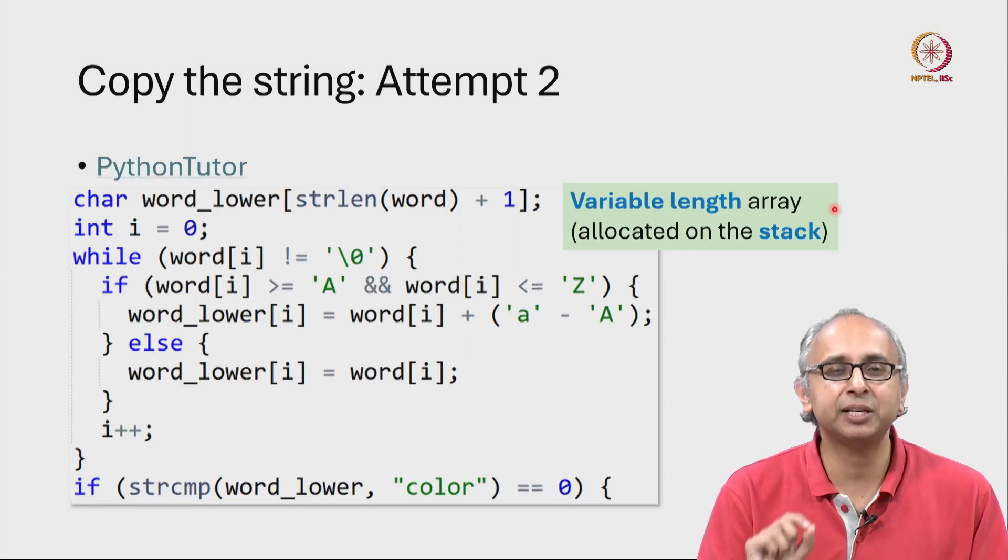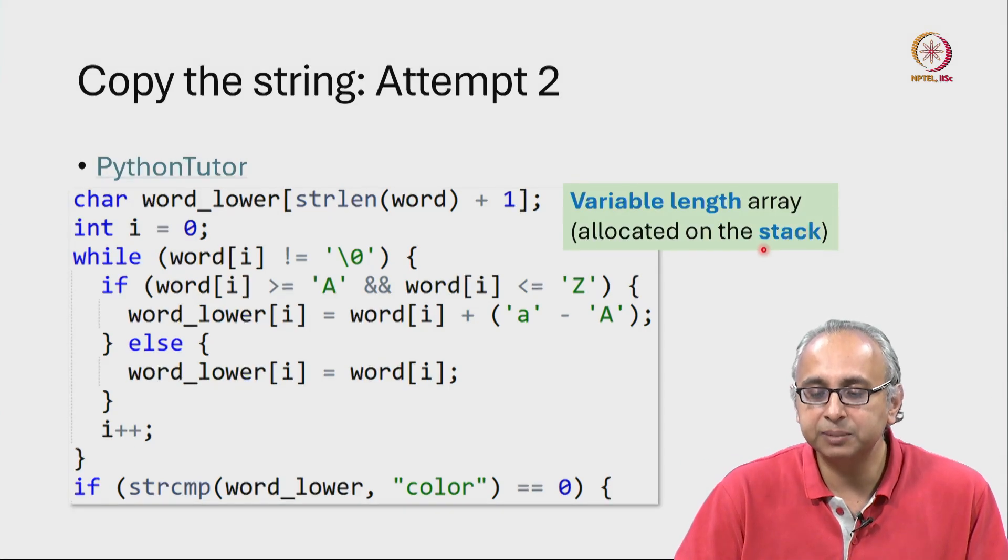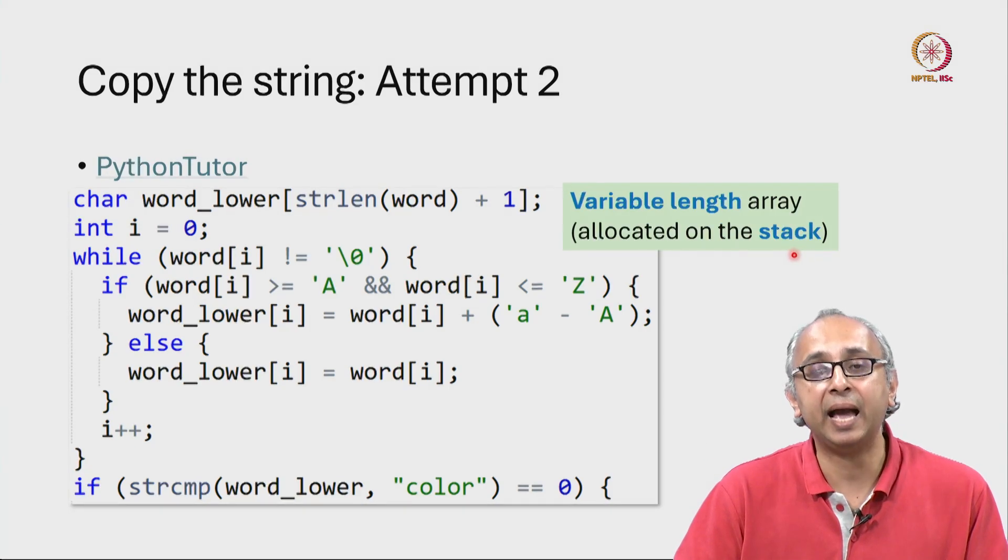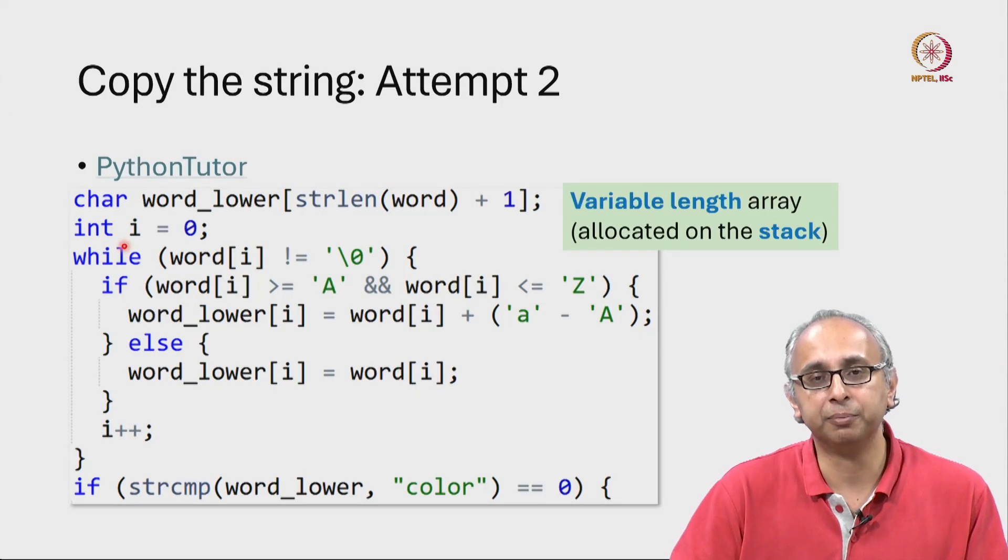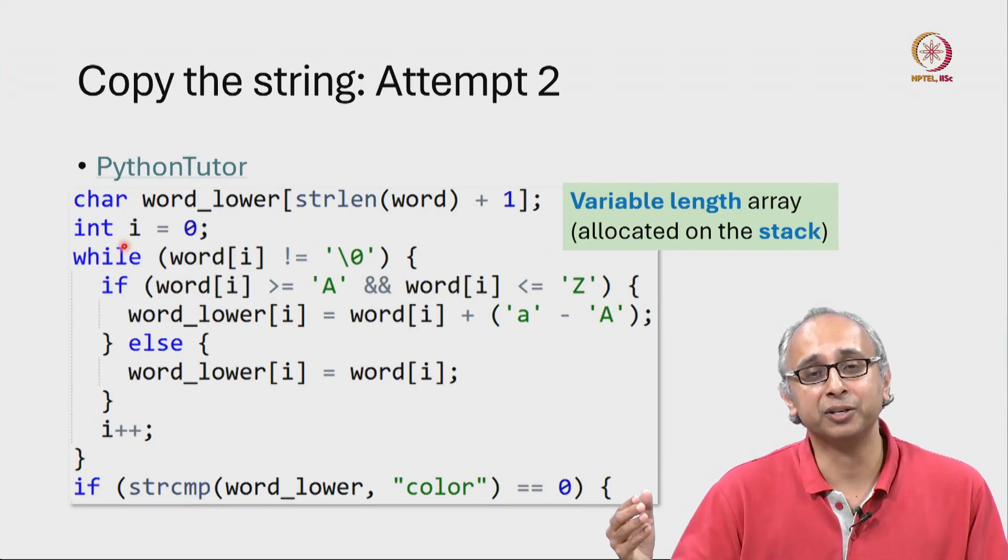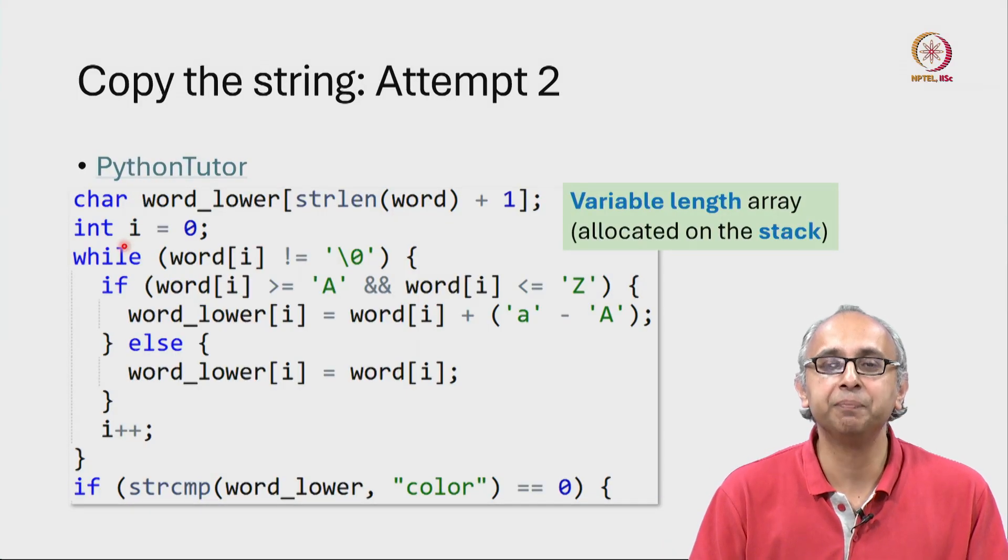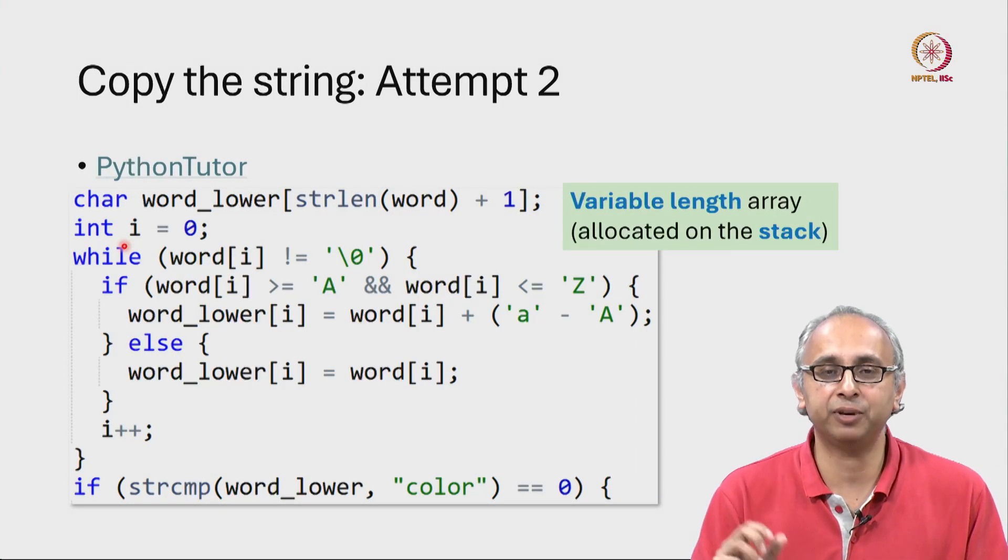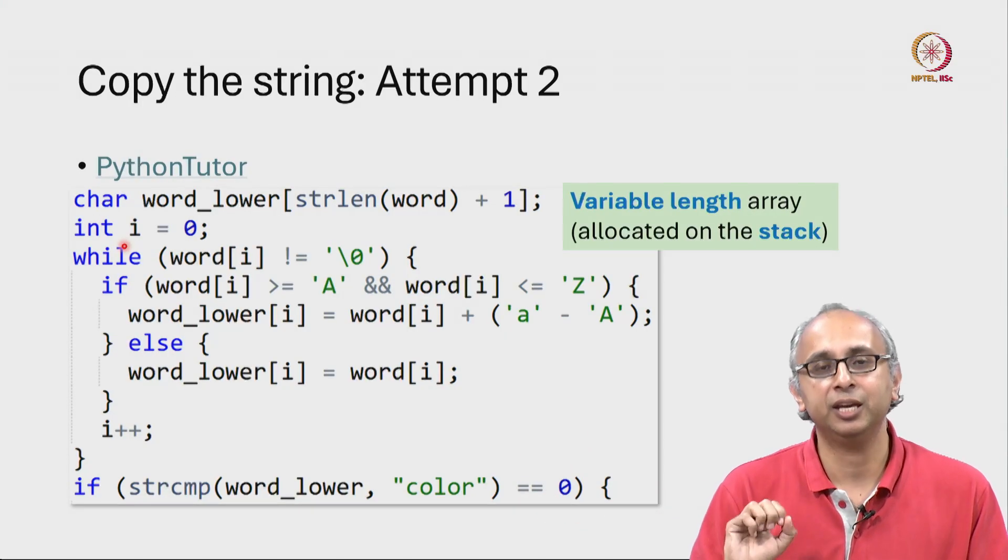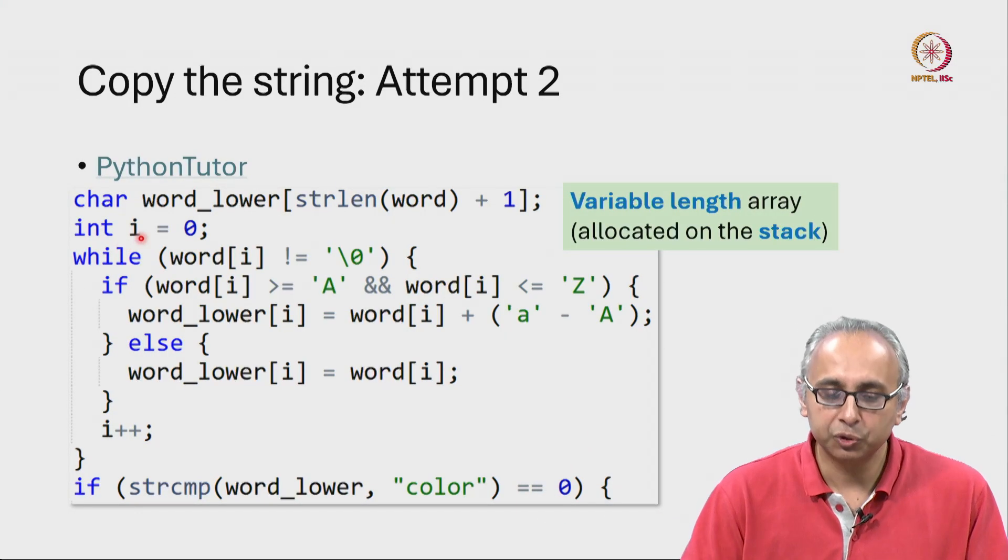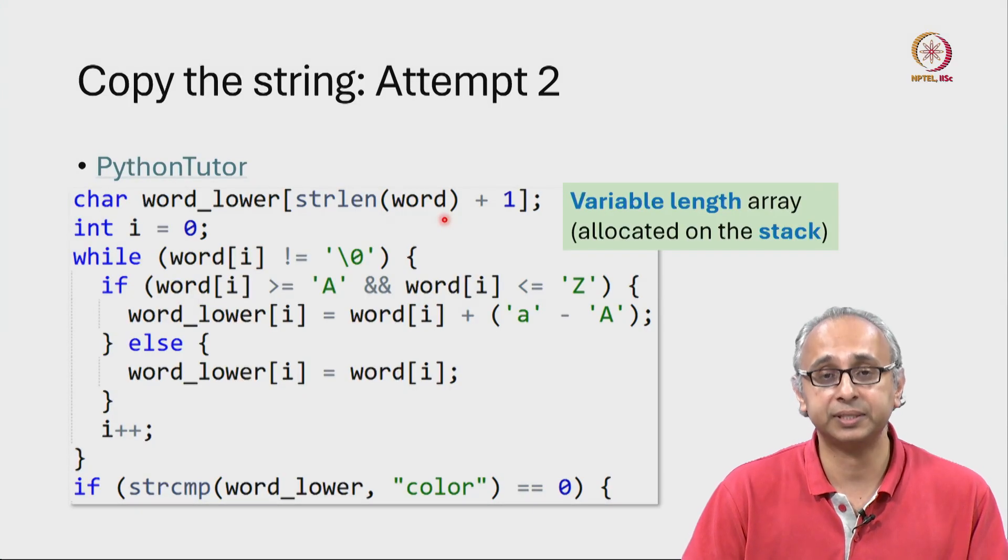Now I have previously hinted to you that there are really two parts of memory. This particular array is going to be allocated on the stack along with every other local variable. There's another part of memory called the heap which we will take a look at very shortly. So far none of the variables that we have seen belong on the heap. Everything is on the stack. So this variable length array is also on the stack.